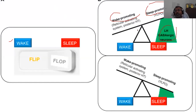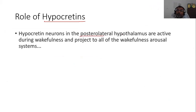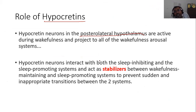This flip-flop model is a recent model of sleep and wakefulness, and detailed information may not be found in all textbooks. There is another important molecule called hypocretin, located in the posterior lateral hypothalamus. Hypocretin is active during wakefulness and projects to all wakefulness arousal systems. It interacts with both the sleep-inhibiting and sleep-promoting systems, acting as a stabilizer to prevent sudden and inappropriate transitions between the two systems. In this way, sleep and wakefulness are managed.